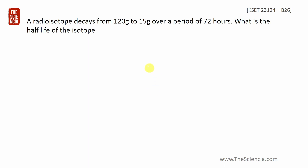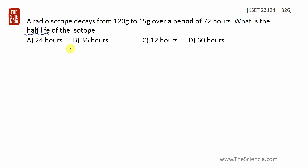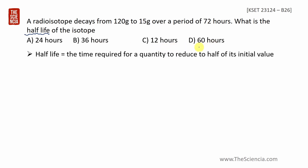A radioactive isotope decays from 120 grams to 15 grams over a period of 72 years. What is the half-life of the isotope? The radioactive material is automatically decaying. The options are 24 years, 36 years, 12 years, or 60 years.